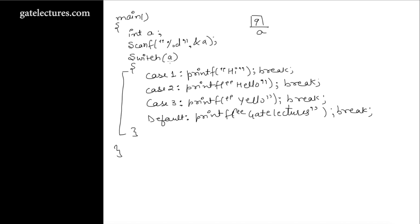Then in the switch statement, we are going to check what value is stored in a, and by seeing that value we are going to compare whether this value is equal to case 1, case 2, or case 3. This 9 is not equal to 1, not equal to 2, not equal to 3. Therefore, it did not match any of our cases.